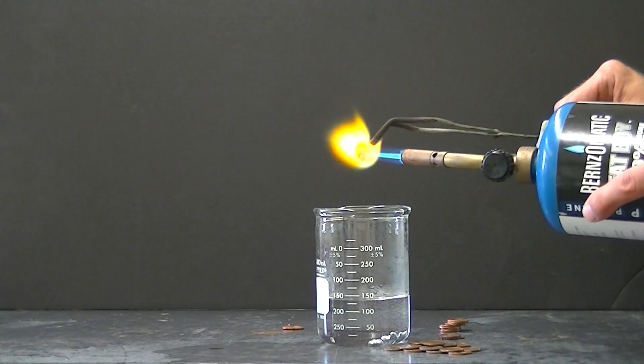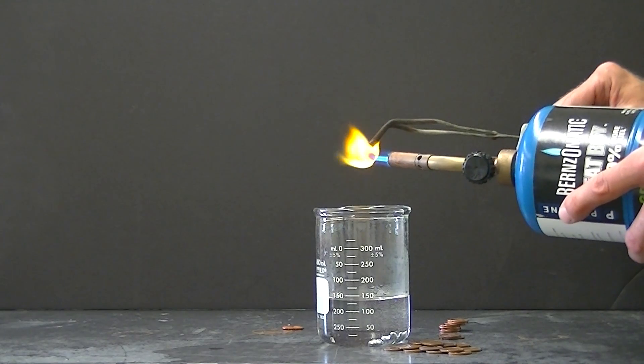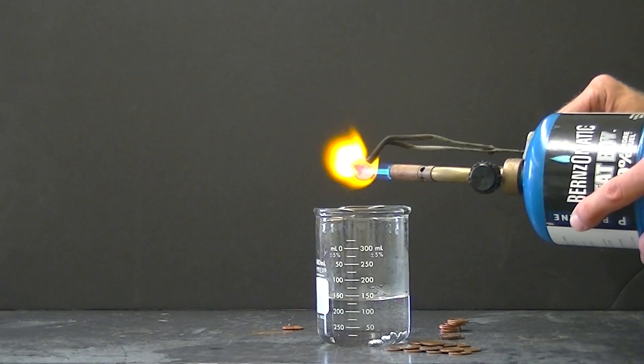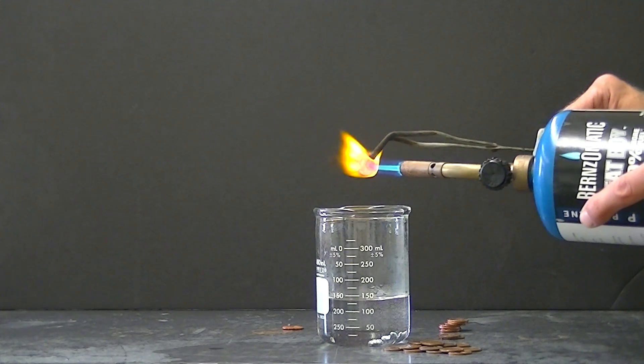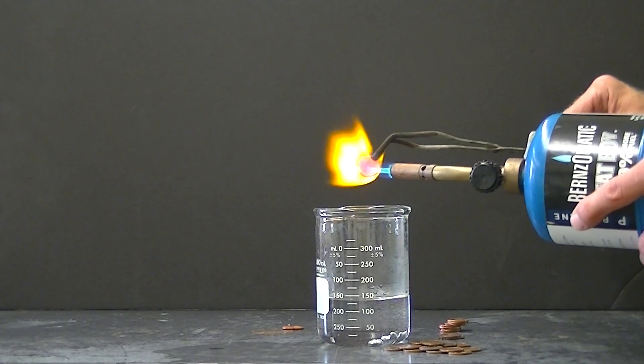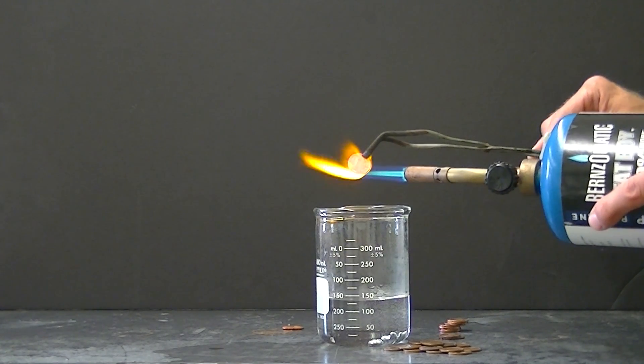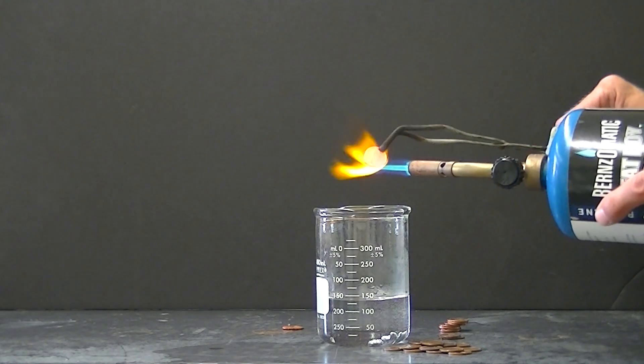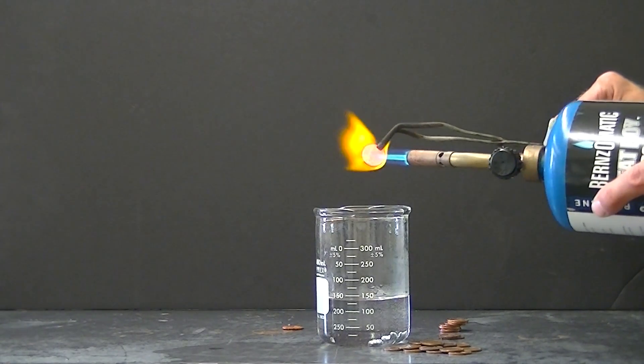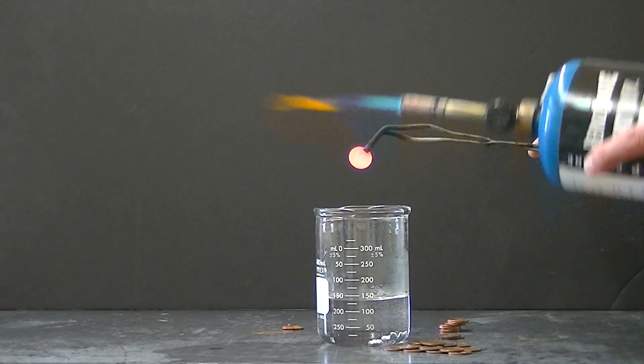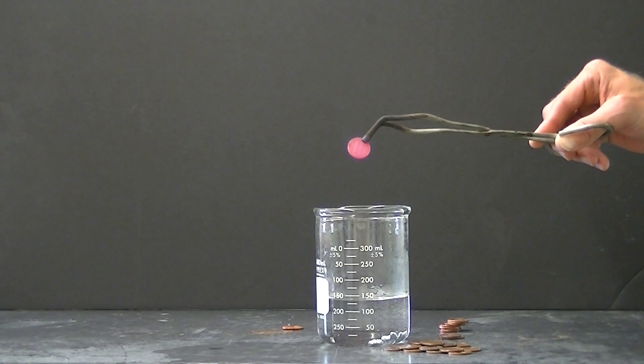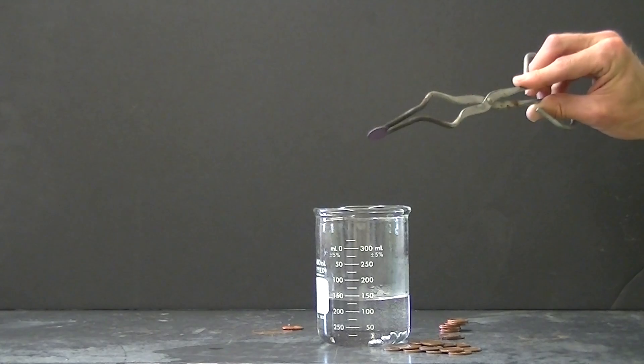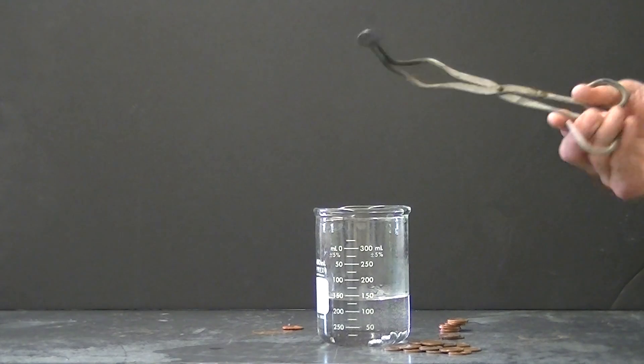I'm going to go ahead and heat this particular penny until it glows. I don't know if you can see this in the camera but beneath the glow I can sort of see the orange red color that's indicative of metallic copper. But then as I remove the flame I see that glow fade to a black color. And again I think that that's copper oxide that's formed on the outside of the penny.